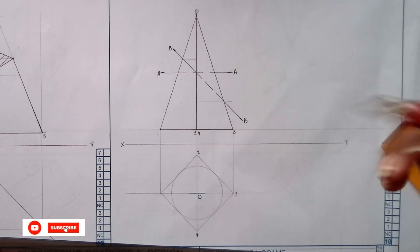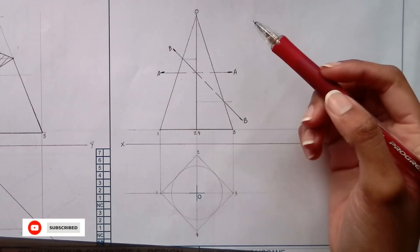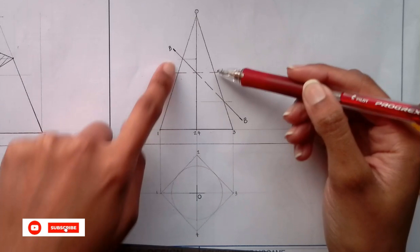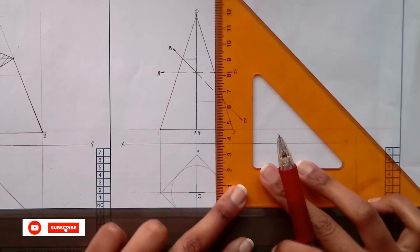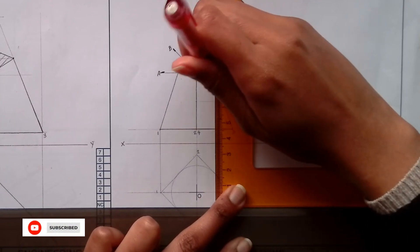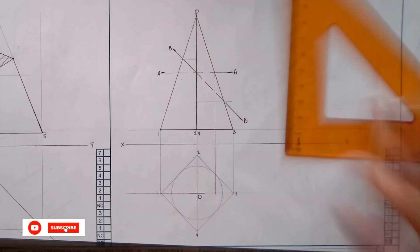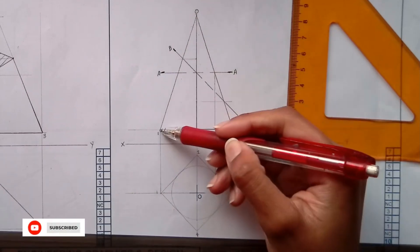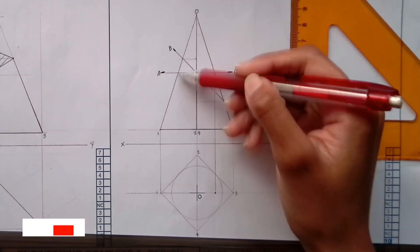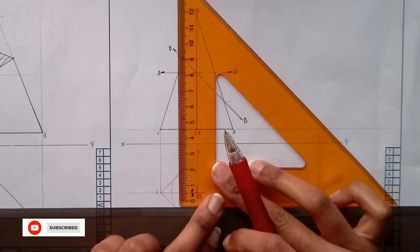After that we are using AA for the top view. That means once again, I have where it cuts 3-0. We have 3-0, it's being cut here. Then we have 1-0, it's being cut here. So I have to bring that to 1-0.